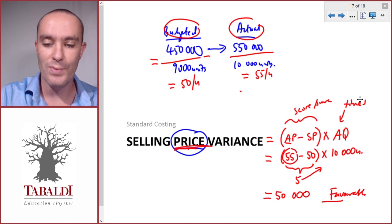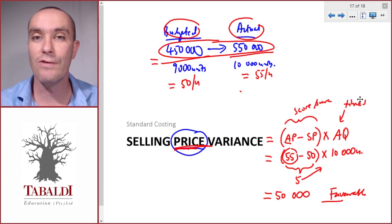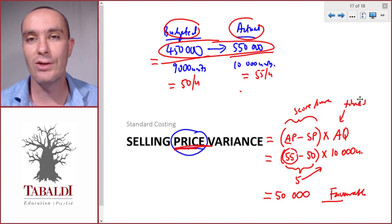You might be asking, but why doesn't that explain the full difference between the actual and the budgeted? Because there's also a volume variance, but that's something you'll only have to calculate at a later level.